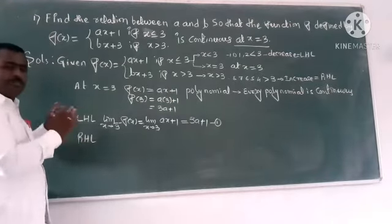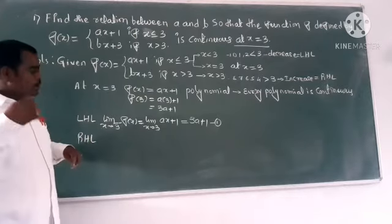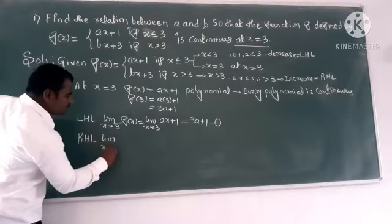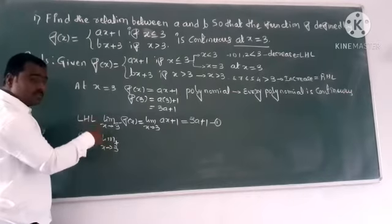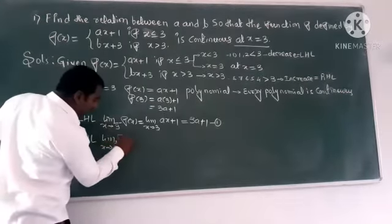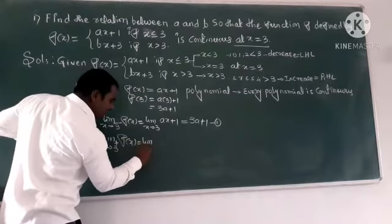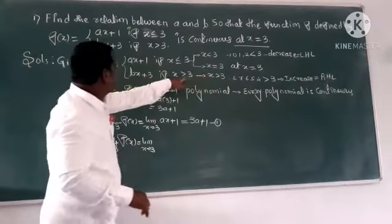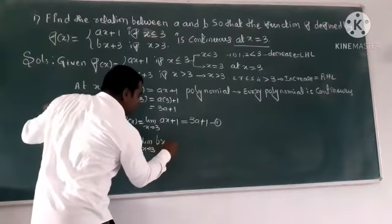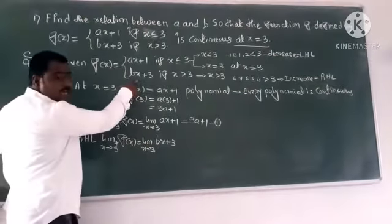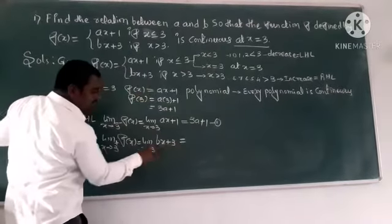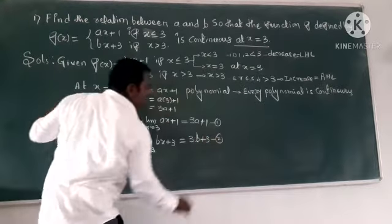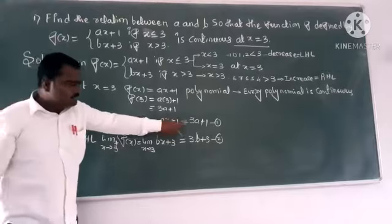Next, the Right Hand Limit (RHL): limit as x tends to 3 from the right. The plus sign means right-hand side. The applicable condition here is bx plus 3. Applying the limit and substituting x equals 3 gives 3b plus 3. This is equation number two.